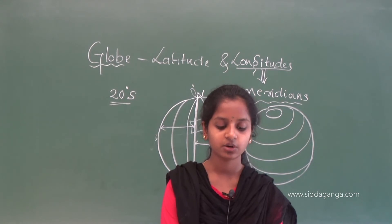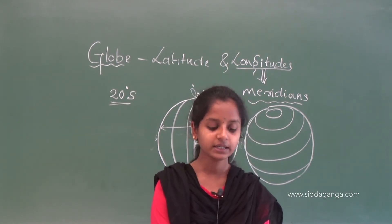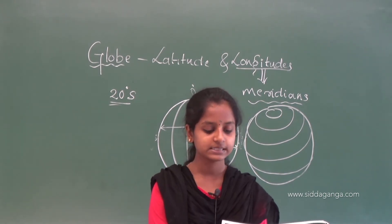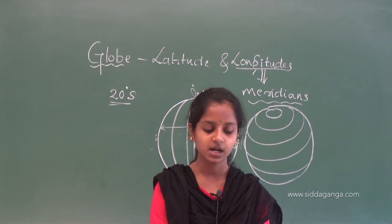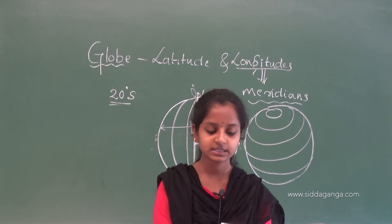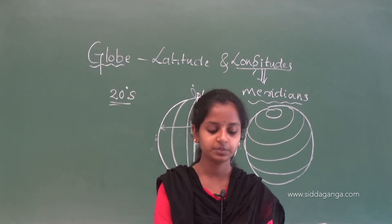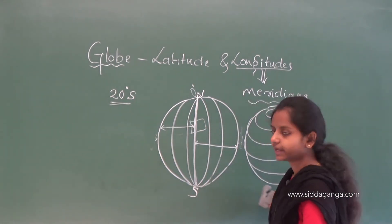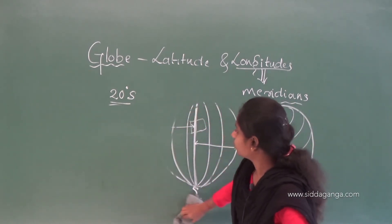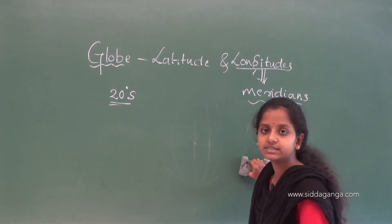Now look at the grid of parallels of latitude and meridians of longitude on a globe. You can locate any point on a globe very easily if you know its latitude and longitude. For example, Dubri in Assam is situated at 26 degrees north latitude and 90 degrees east longitude. Longitudes are represented as degree east or degree west.